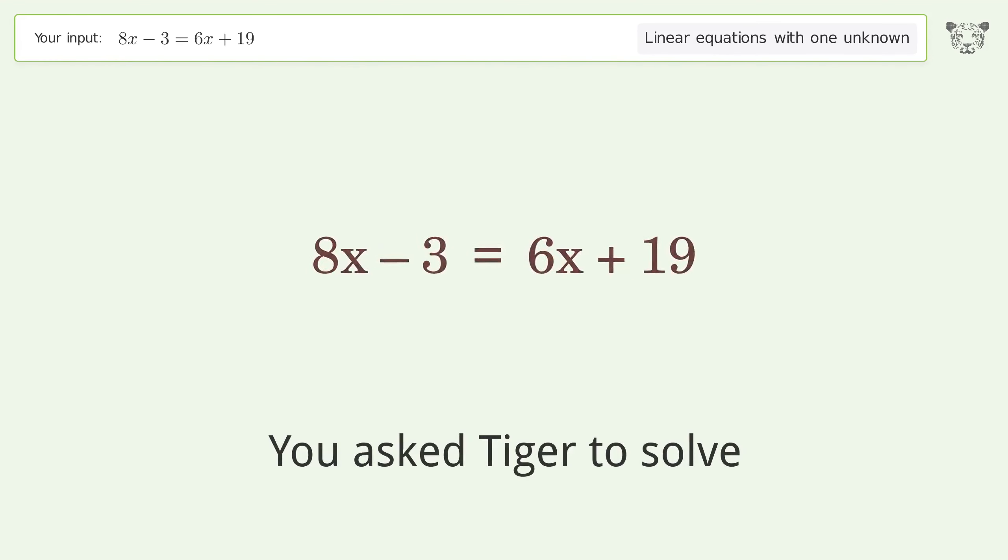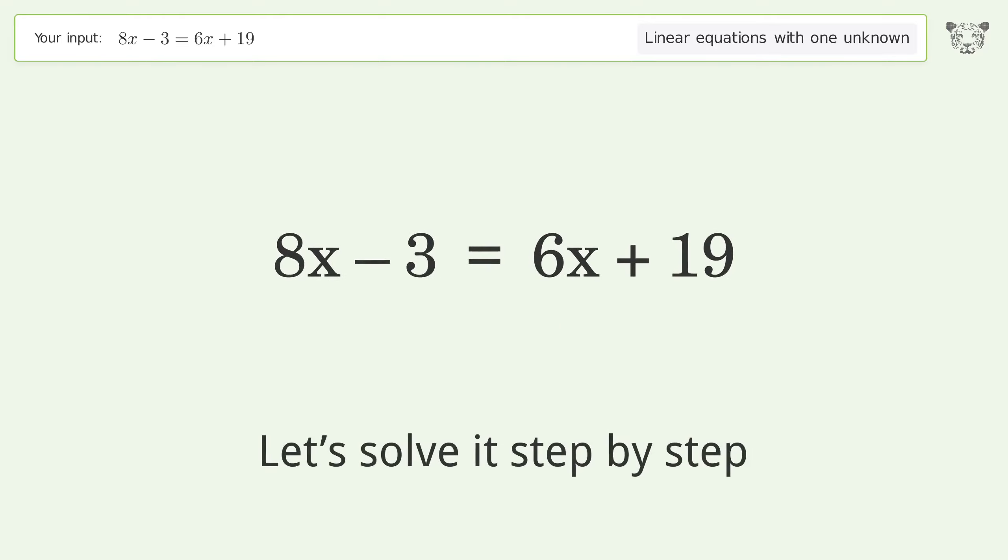You asked Tiger to solve. This deals with linear equations with one unknown. The final result is x equals 11. Let's solve it step by step.